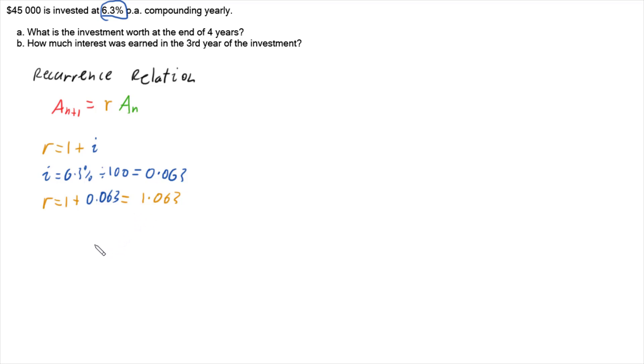And then we can work with A_n, but we first got to work out our first term, because really A_n is each successive term. So we've got to figure out what the first term is. And the first term is our principal, it's how much we initially invest. So our first term is 45,000.